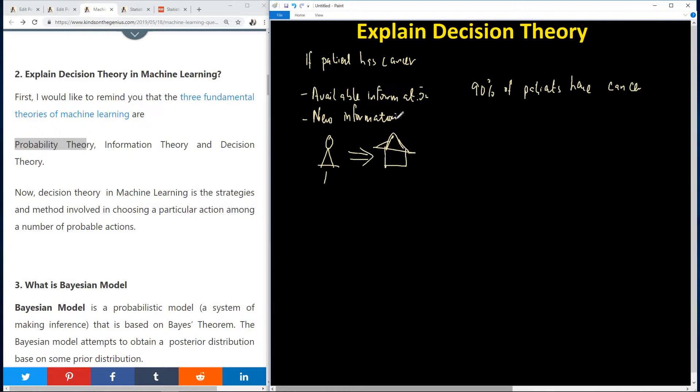Now, new information is information that you get after testing this patient. So this one you get after performing a test. So now this information we are talking about, they are in terms of probability. In this case, we have 0.9 probability that the person has cancer.